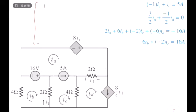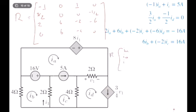Let's build the matrix equation. The first row corresponds to the current source relation: [−1, 0, 1, 0]. The second row for the iD equation: [3/2, 0, 0, −1/2]. The third row for the super mesh KVL: [2, 6, −2, −6]. The fourth row for the iB mesh: [0, 6, −2, 0]. Call this matrix R. Then R · [iA, iB, iC, iD]ᵀ = [5, 0, −16, 16]ᵀ.